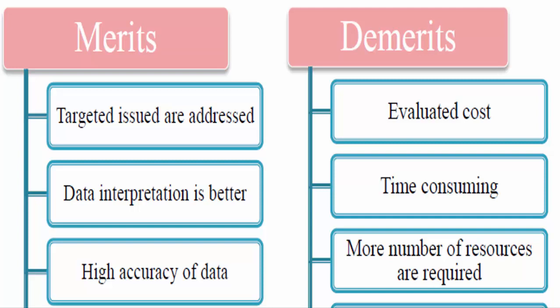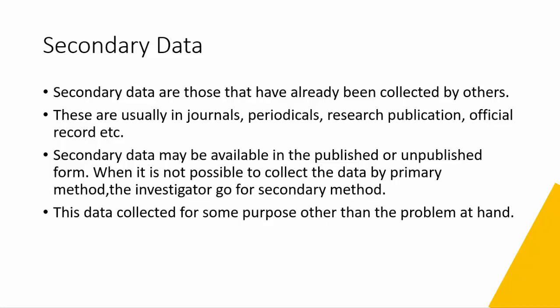However, there are also demerits to primary data. Cost can be a huge problem, especially for large M&E interventions. For instance, organizations like the World Bank and IMF track indicators for every country around the world — that information is expensive to collect. Primary data collection can also be very time consuming.